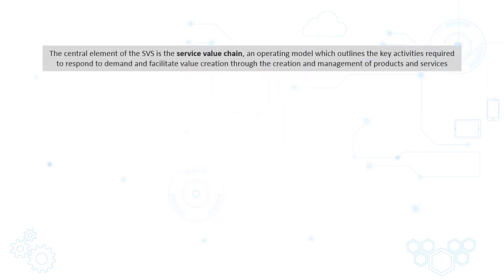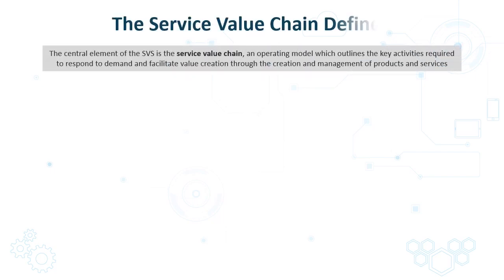The central element of the service value system is the service value chain. This is an operating model that outlines the key activities necessary to respond to demand and facilitate value creation through the creation and management of products and services.